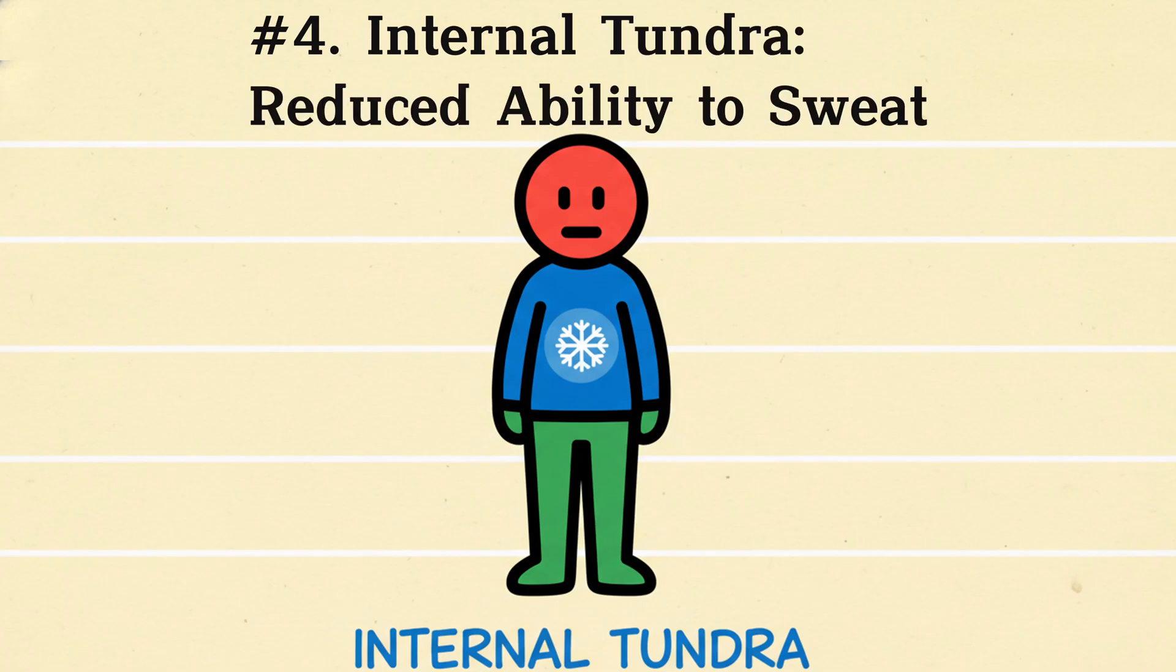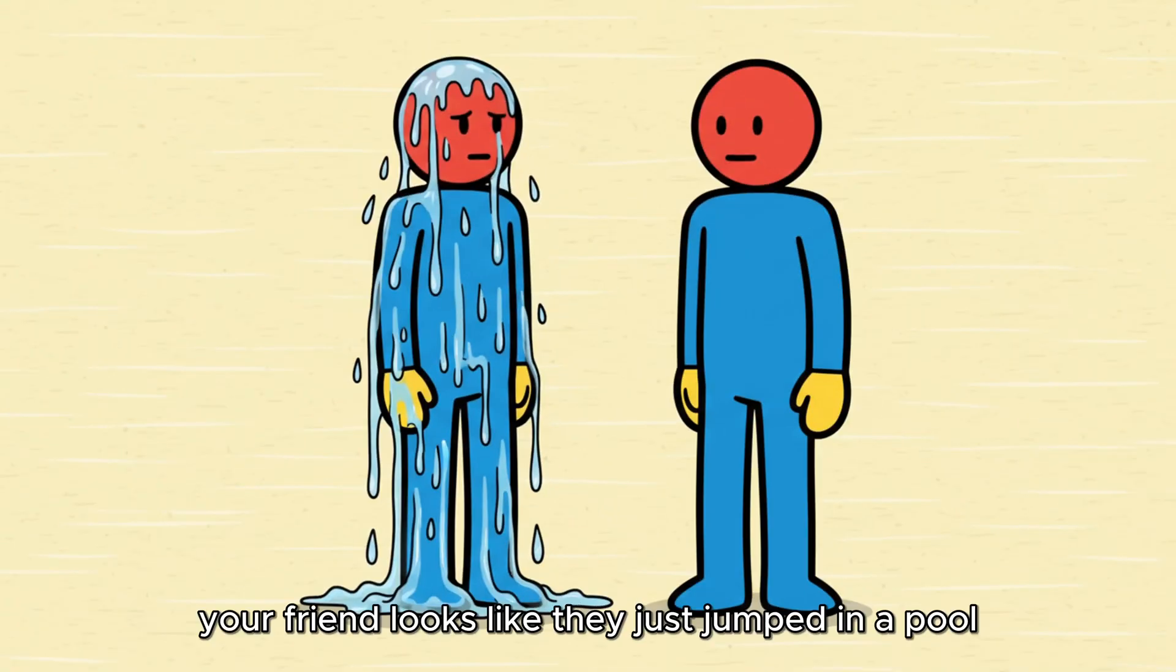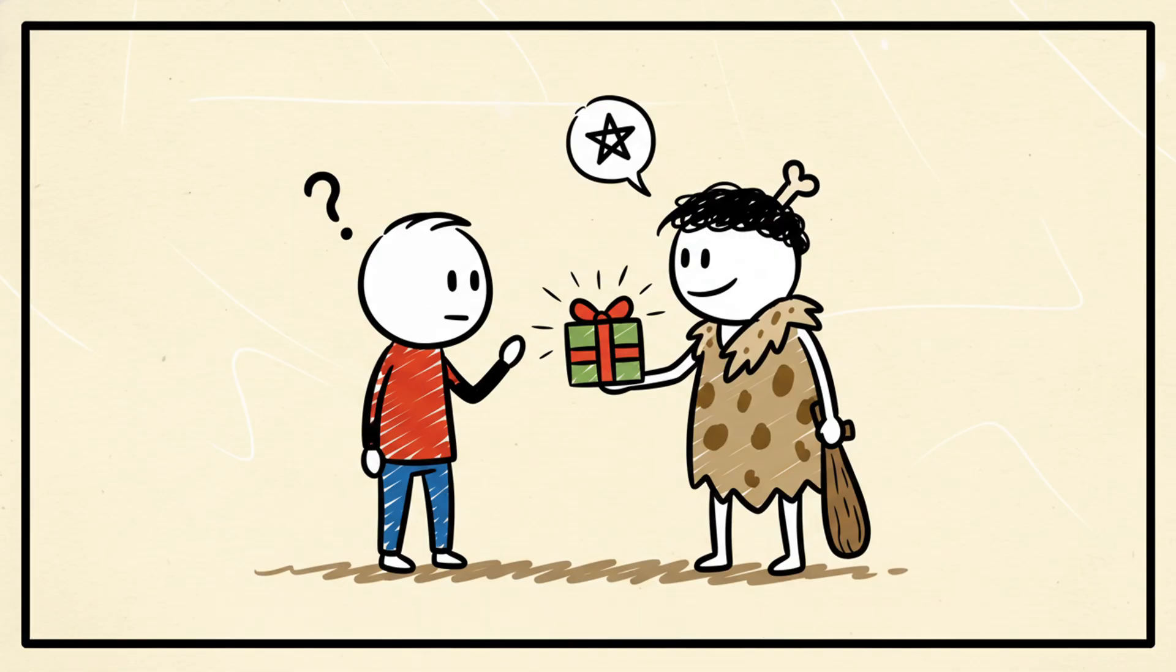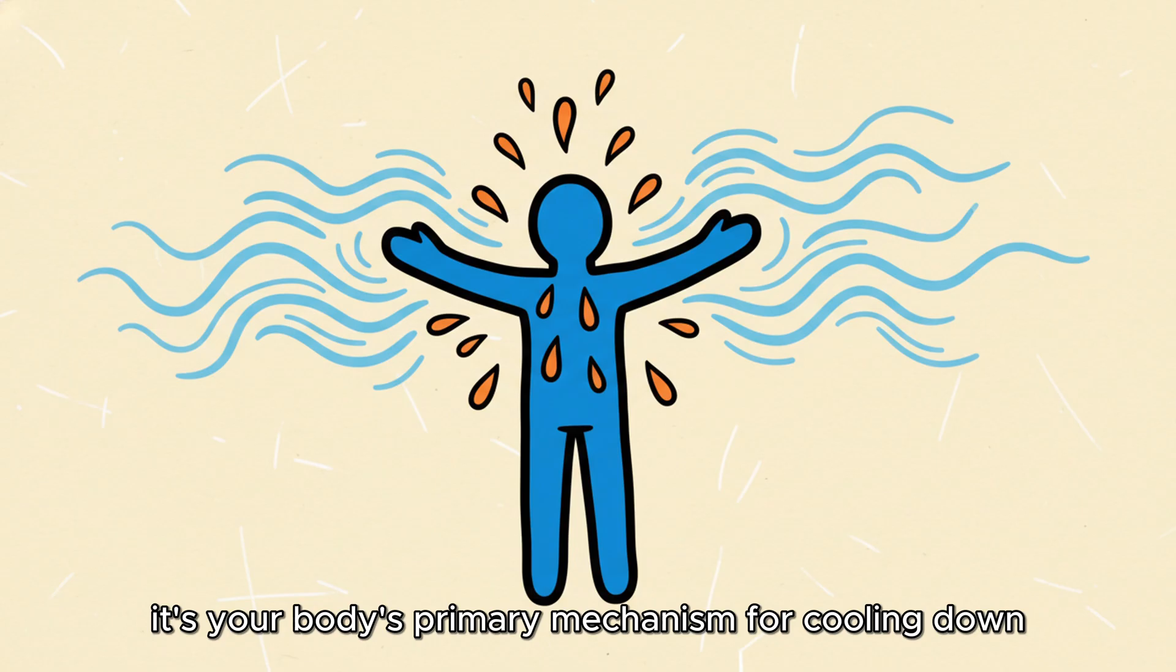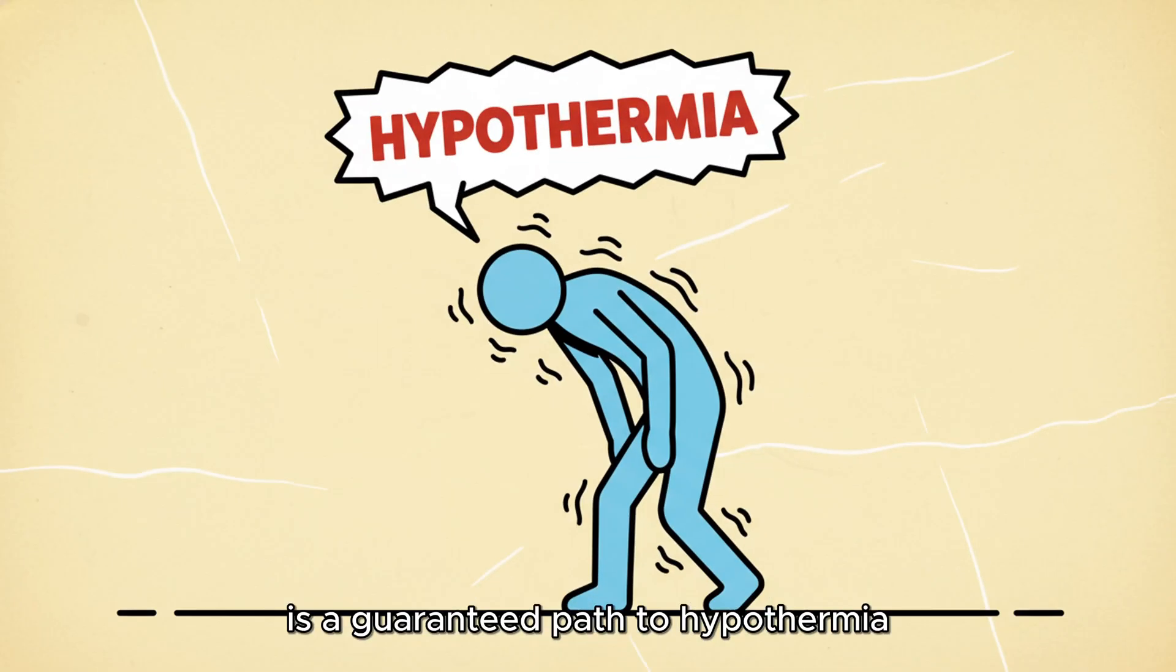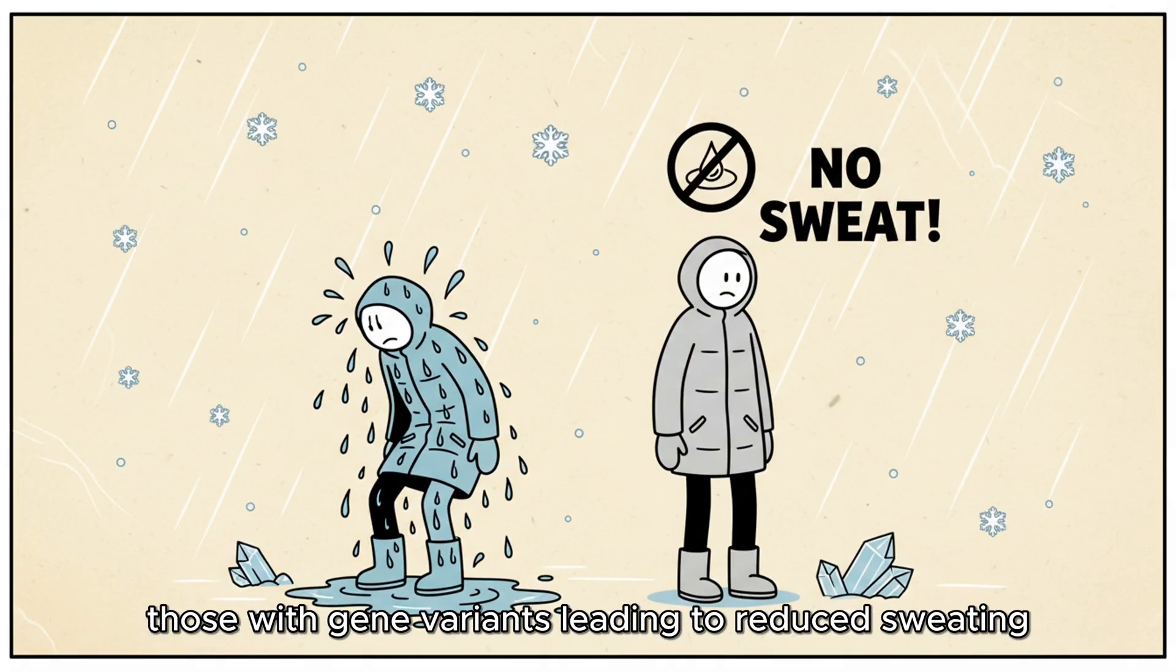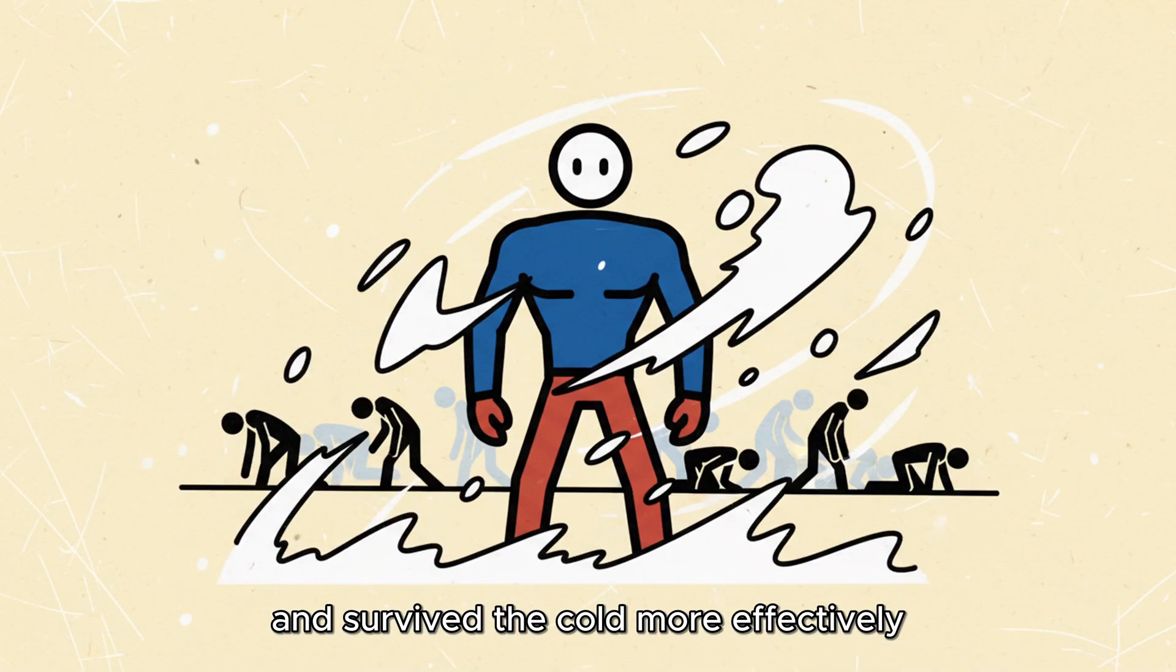Number 4. Internal Tundra – Reduced Ability to Sweat. Have you ever noticed that you barely break a sweat, even during a high-intensity workout, while your friend looks like they just jumped in a pool? If you have fewer Ekrin sweat glands, that's another gift from your Ice Age ancestors. In a warm climate, sweating is life. It's your body's primary mechanism for cooling down. But Neanderthals lived in exceptionally cold, often damp environments. Sweating heavily in sub-zero temperatures is a guaranteed path to hypothermia. If you're wet and the air is cold, your body temperature plummets. Therefore, those with gene variants leading to reduced sweating had a huge advantage. They conserved body heat better and survived the cold more effectively.